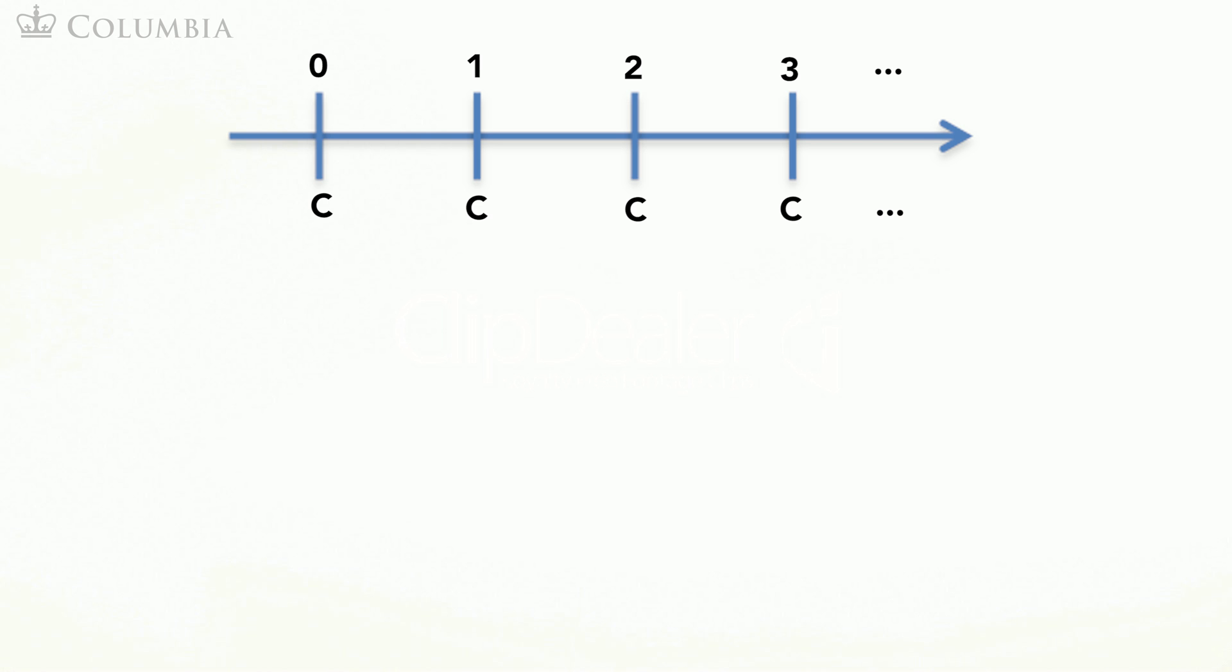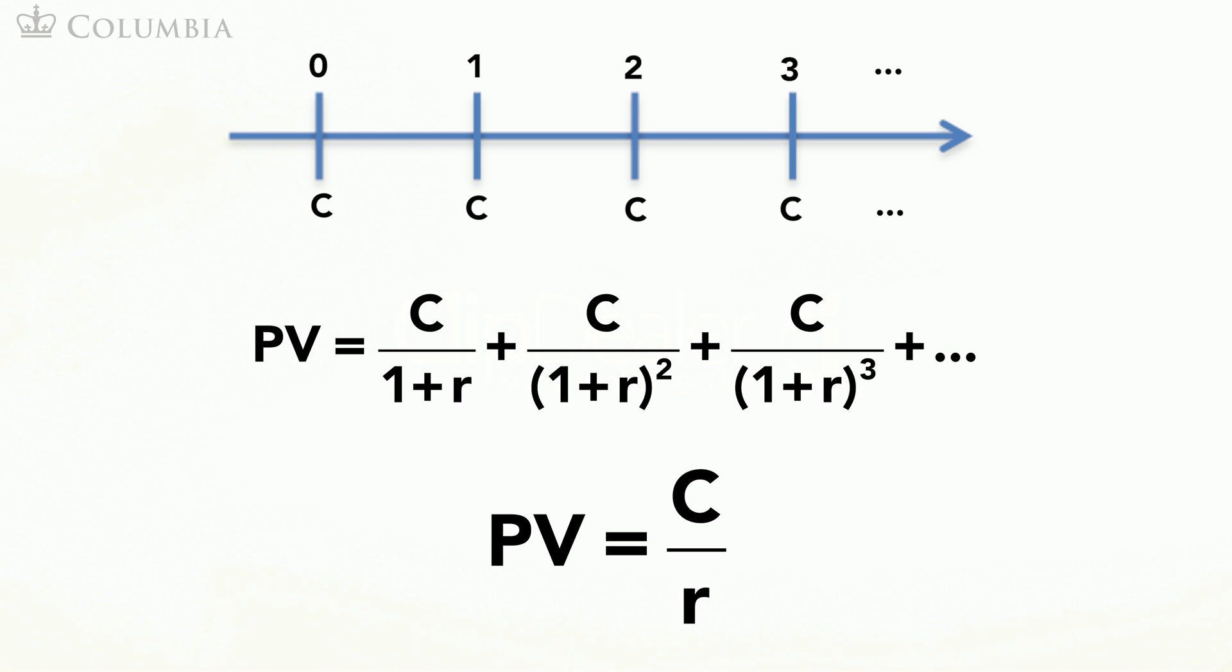Well, we can apply the formula and start discounting each of these cash flows to the present. But this is tedious and you will really never be done since the cash flows continue forever. Luckily for us, this sum of many terms is equal to this simple expression: C over R, that is the first cash flow divided by the discount rate.